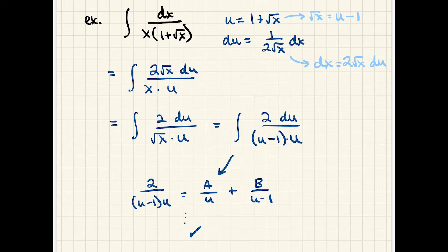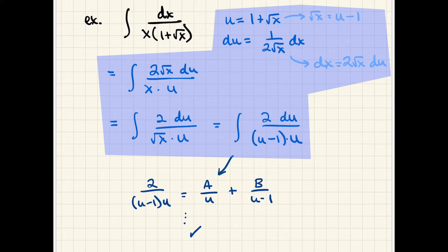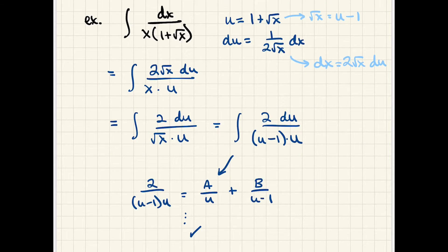The denominator is conveniently already factored. We write it as A over u plus B over (u − 1), work out coefficients A and B, and integrate to get natural log of u plus natural log of (u − 1), then roll the substitution backward. The most interesting part was right at the beginning; after that it's just pure mechanics.